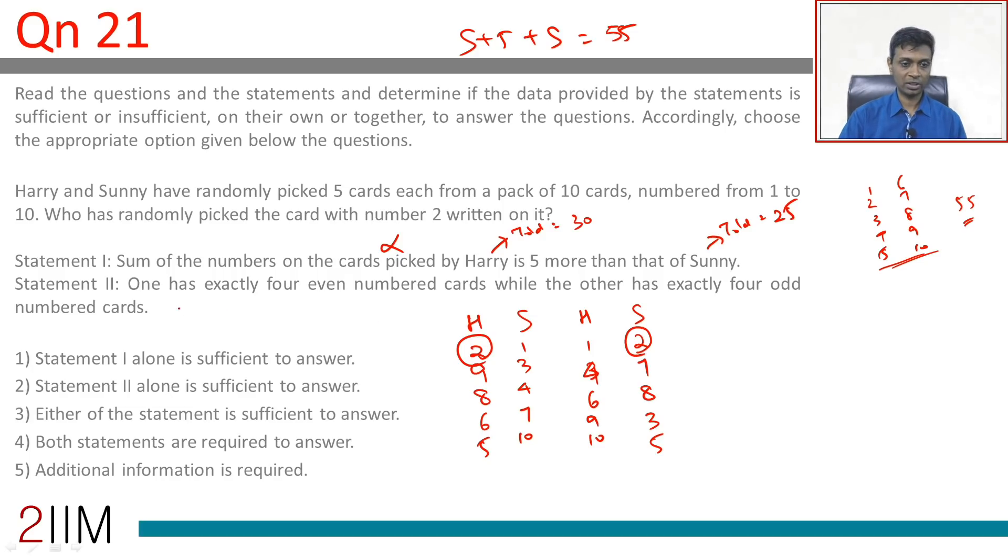So Harry could have 2, 4, 6, 8, and 5, and Sonny could have the rest. Or Harry could have 4, 6, 8, 10, and 3, and Sonny could have 2 and the rest. Statement 2 alone is definitely not sufficient.